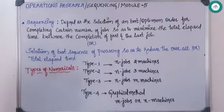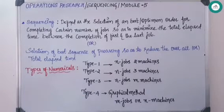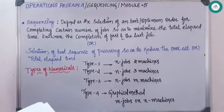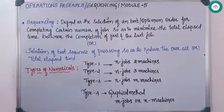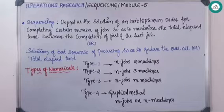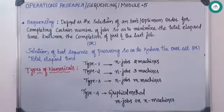Sequencing reduces overall time, which in turn allows us to produce more number of components or parts. As a result, productivity is improved. And if productivity is improved, then we can expect good income.